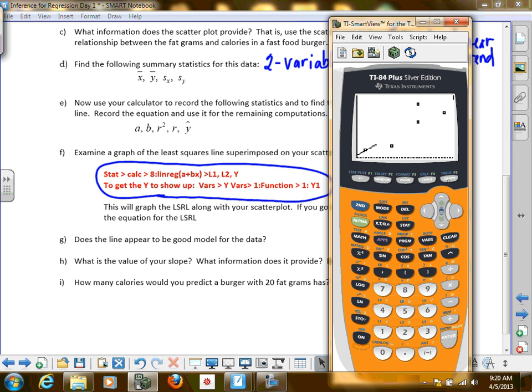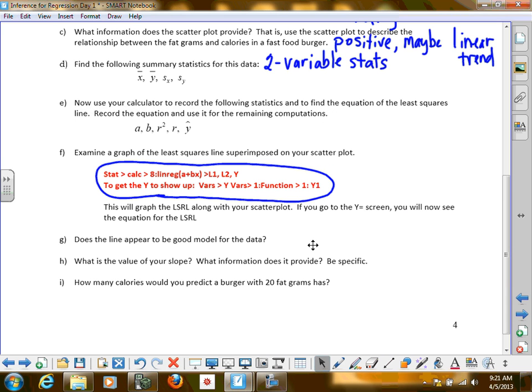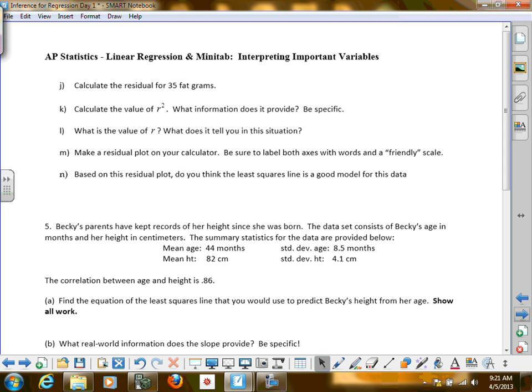So if I graph it, it shows up nice and pretty going through all my data. And G, does the line appear to be a good model? Does the line appear to be a good model? Sure. Value of our slope. And then I want you to say what that is. How many calories would you predict? Okay. And you can do that. So we're not finishing all of these. You're going to fill in the blanks for homework. And then here we have another one. Calculate the residual for 35 grams of fat. We just did that on something a minute ago, right? Oh, the one you had last night. And then here's our squared R. Make a residual plot. We've done that already. And based on this, do you think the least-squared regression line is a good model?